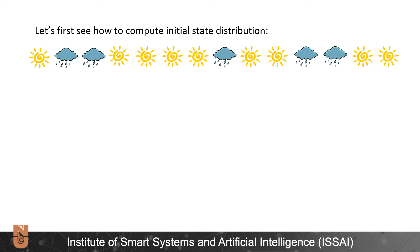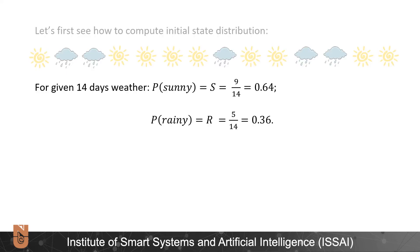Now let's first see how to compute initial state distribution. We are given chronological weather information for a 14 day period. In consecutive 14 day period we had 9 sunny days. So probability of sunny day is 9 over 14 which is 0.64 and rainy days is 5 over 14 which gives us 0.36.